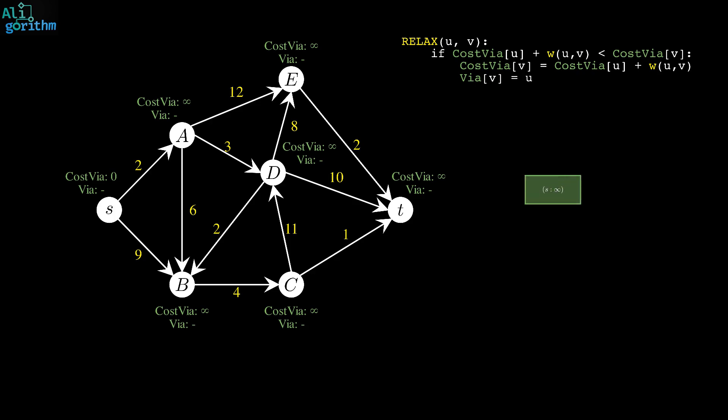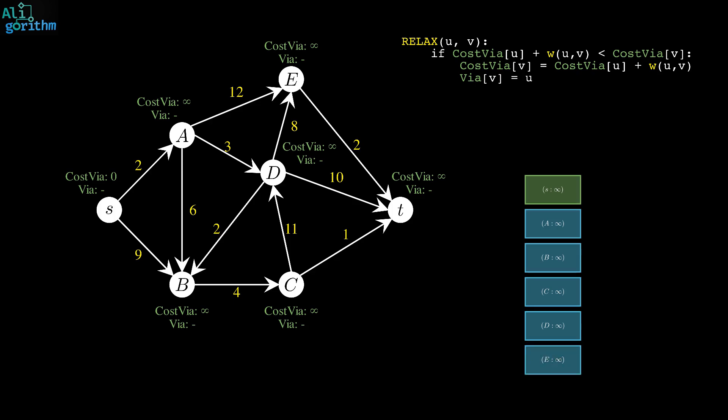The algorithm also uses a priority queue, or a heap, shown on the right. Roughly speaking, a priority heap is a data structure that allows elements to be sorted in such a way that you can easily extract the one with the minimum cost. During the initialization step, all vertices are inserted into the heap with their cost via as a cost.